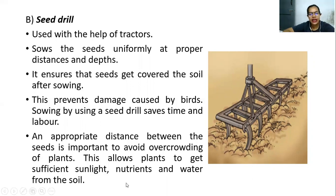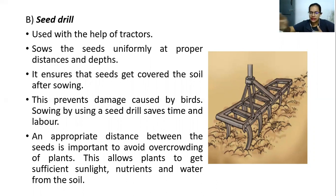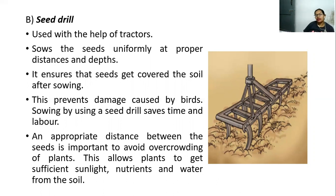Maintaining an appropriate distance between the seeds is important to avoid overcrowding of plants. If too many plants grow in the same place, it is not good because the plants will not be able to grow properly or healthily. Sowing at a proper distance allows plants to get sufficient sunlight, nutrients, and water from the soil. In today's class, we discussed agricultural practices — soil preparation and the seed sowing process.